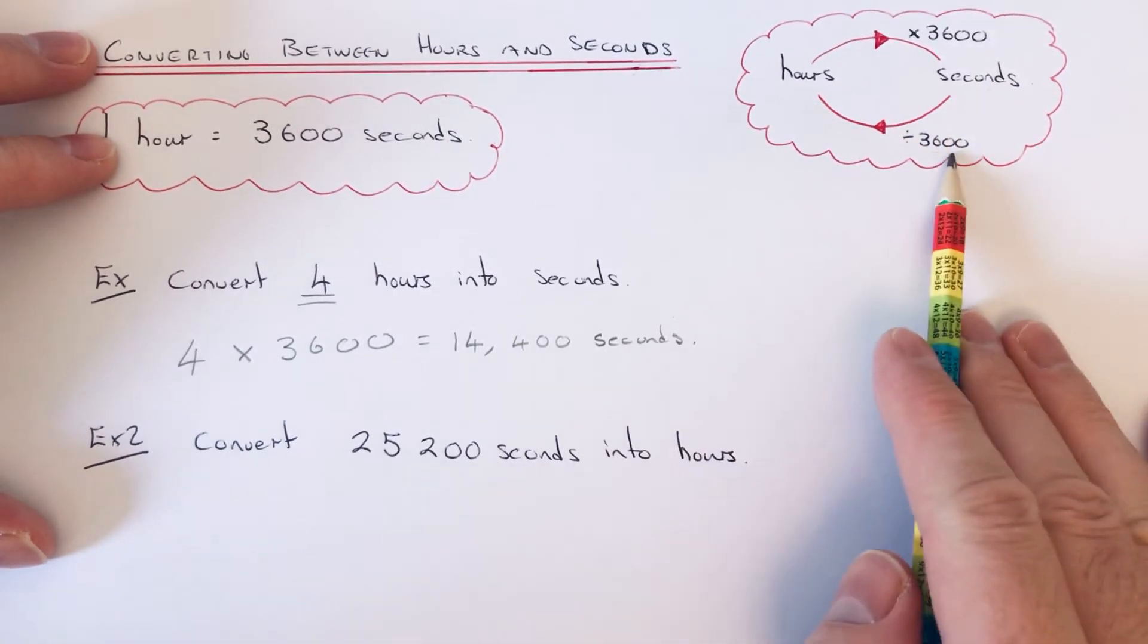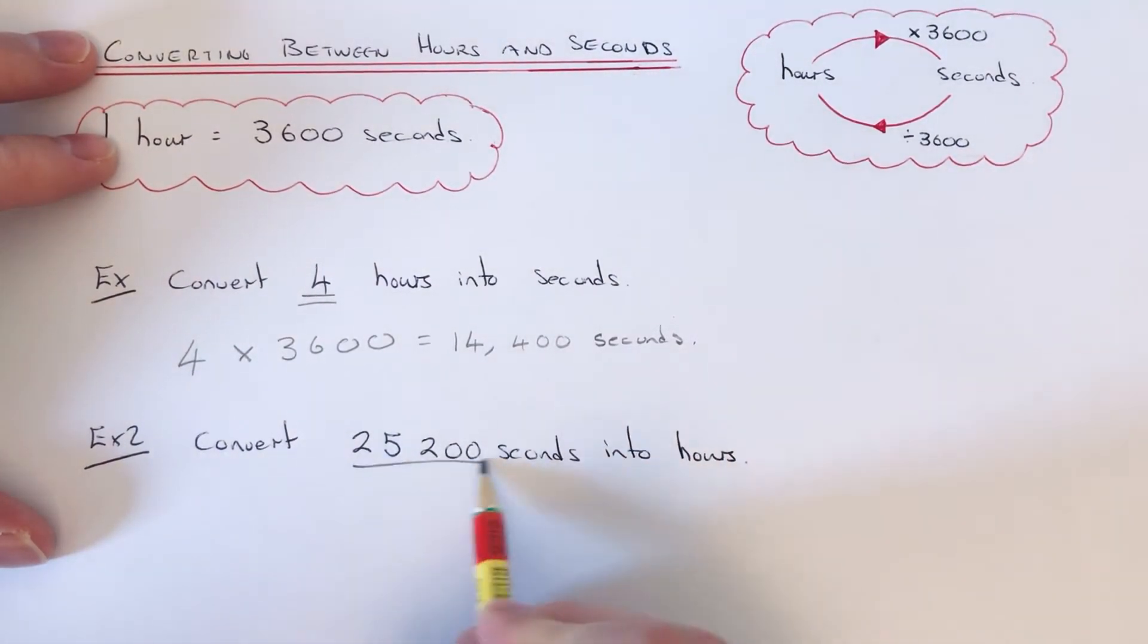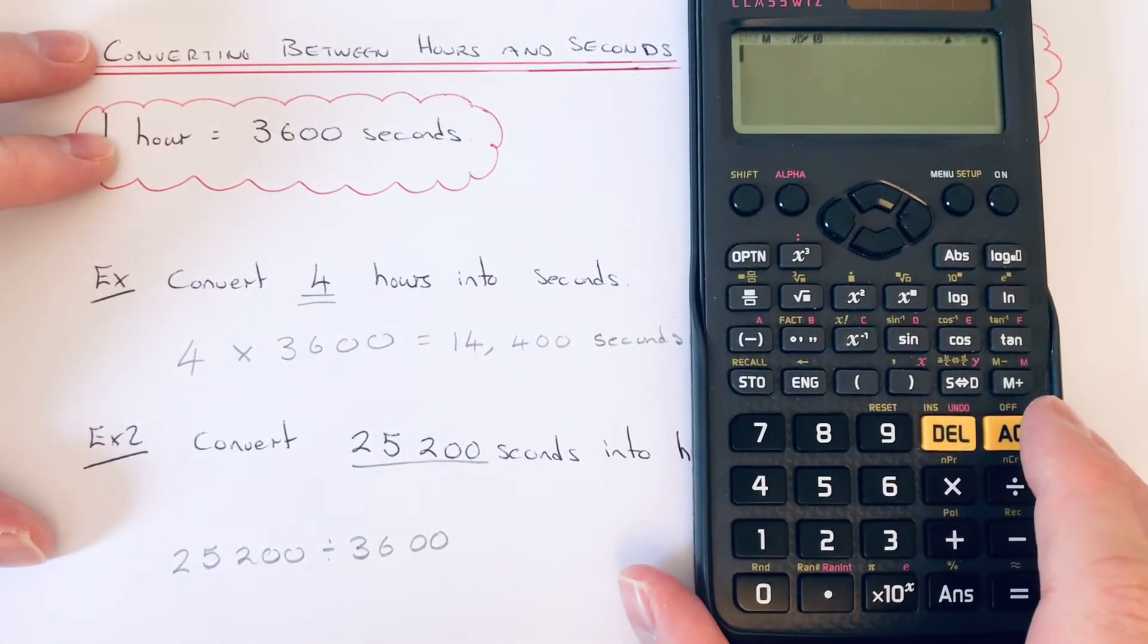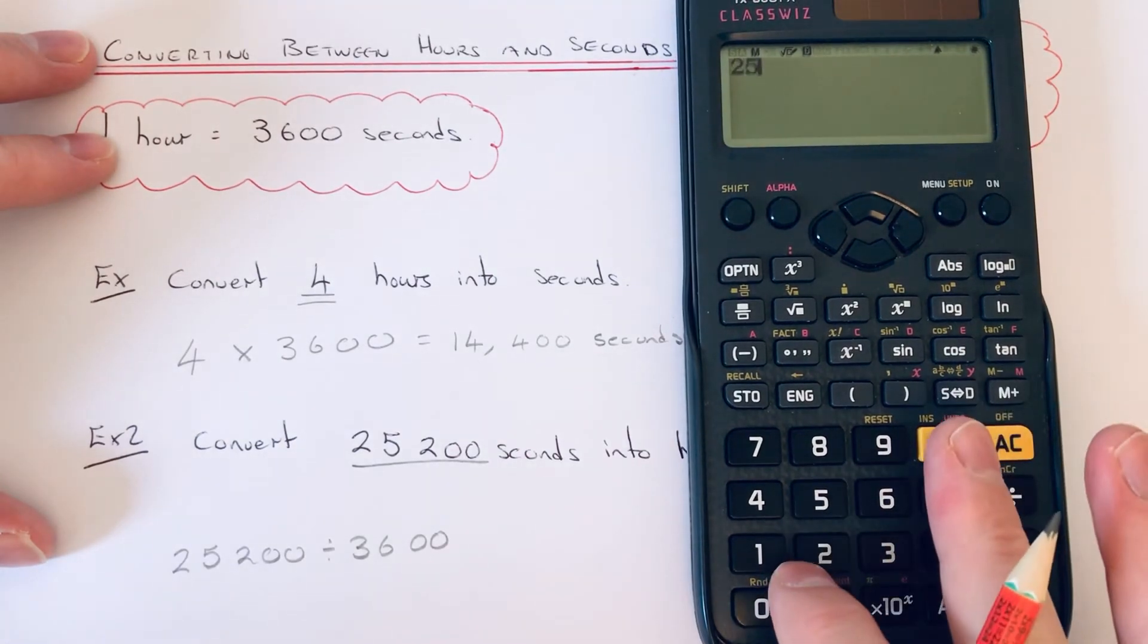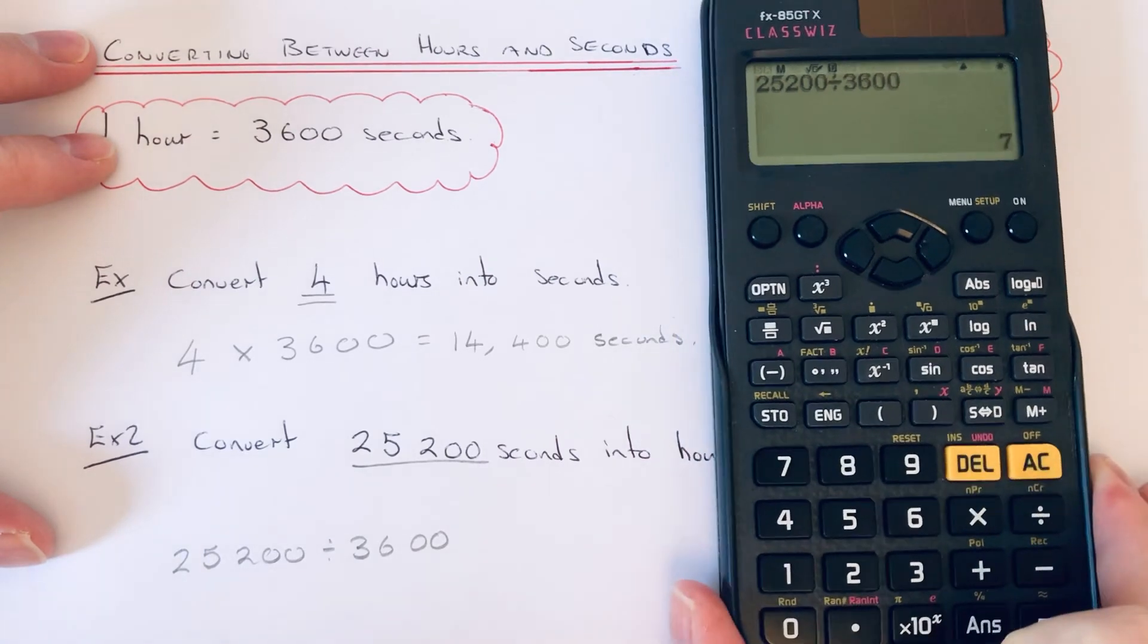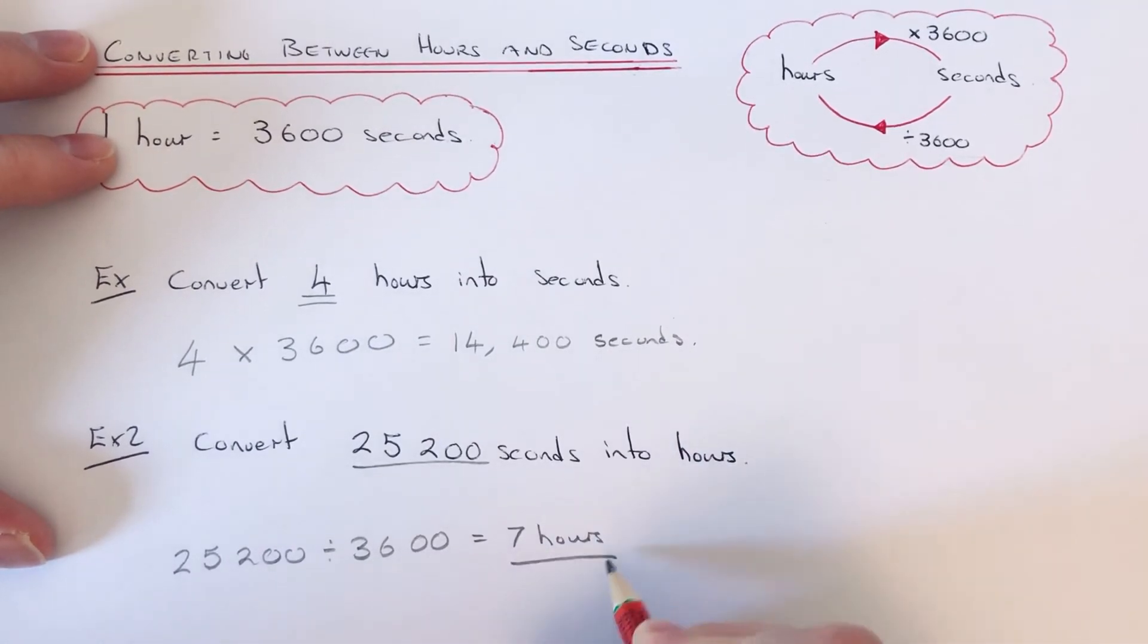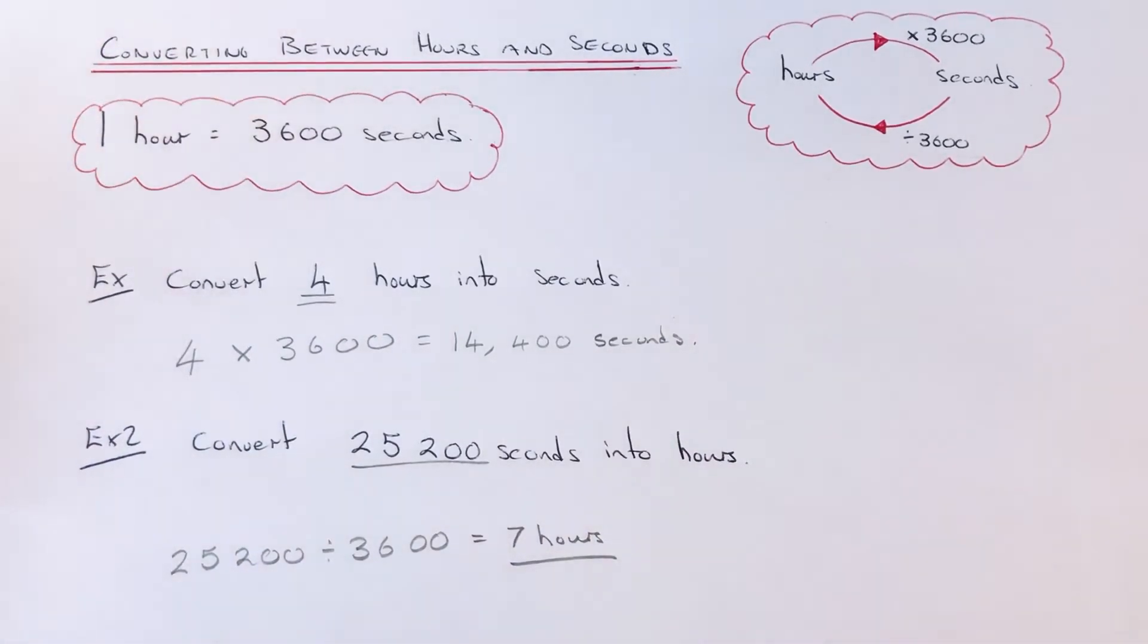So if we copy down the number first, twenty-five thousand two hundred, we've got to divide by 3600. So twenty-five thousand two hundred divided by 3600, and we get an answer of seven. So we have seven hours.